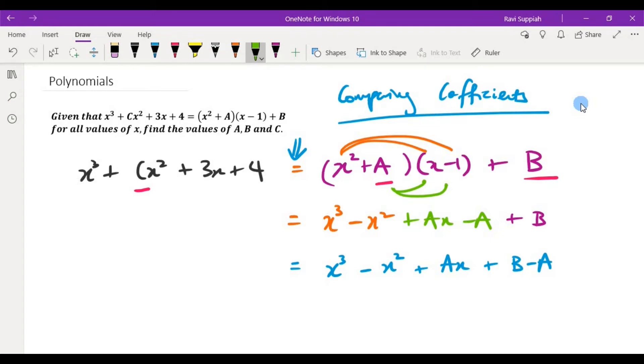So for x cubed, the coefficient here is 1. For x squared, the coefficient here is negative 1. For x, the coefficient here is a, and the constant here is b minus a.